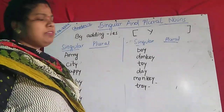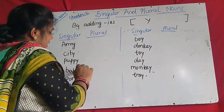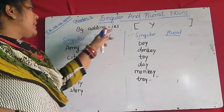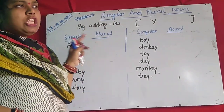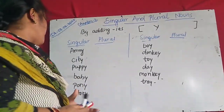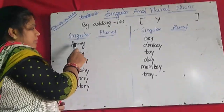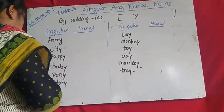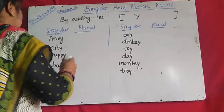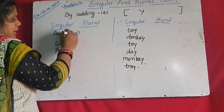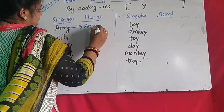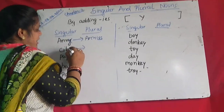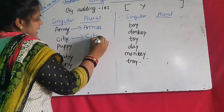Another rule: if the word is ending with Y, then the plural will be IES. Y will be removed and in place of Y you write IES while changing from singular to plural. Same rule as before: if before Y there is a consonant, then IES. So 'army' — Y is before M, which is a consonant — Y will be removed, then A-R-M-I-E-S: 'armies.' 'City' — C-I-T-Y — Y will be removed — C-I-T-I-E-S: 'cities.'